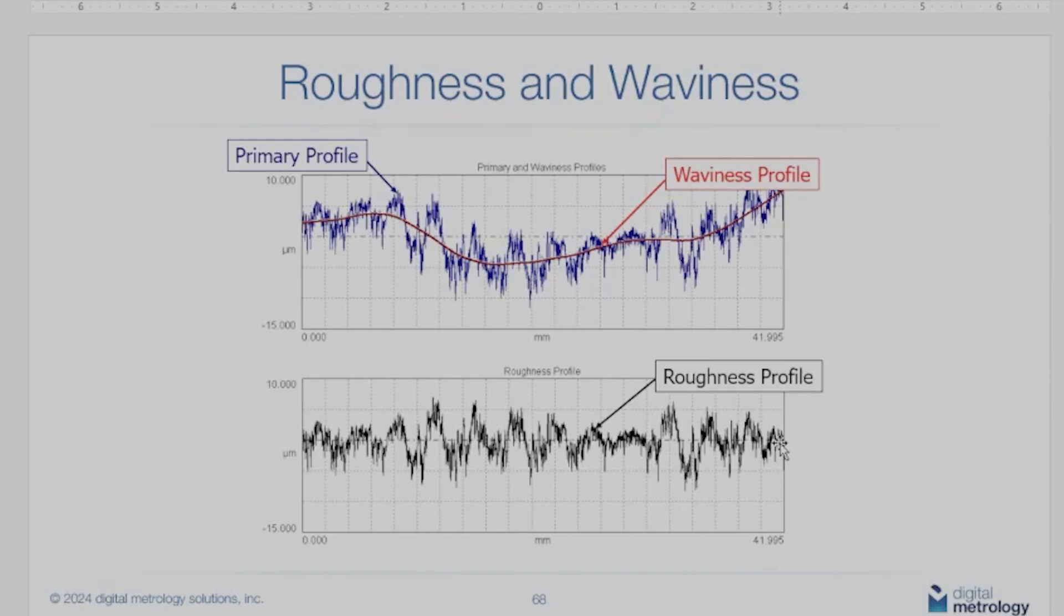We create a waviness profile that becomes zero for roughness. Everything is relative to itself. In the world of surface form and geometry, we're talking about shapes relative to themselves always. Roughness has a zero line based on the waviness line that we flattened out.